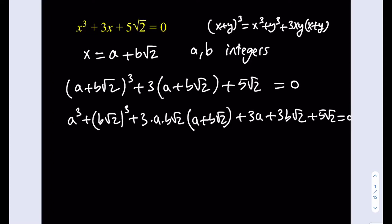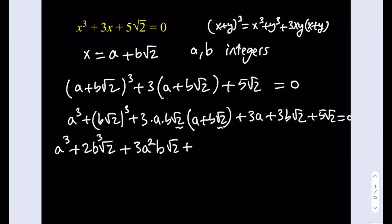Let's expand this more. This becomes a³. Now, how do you cube b√2? b³ is just b³, but (√2)³ = √2 · √2 · √2 = 2√2, so (b√2)³ = 2b³√2. Then distributing 3ab√2 over (a + b√2) gives 3a²b√2, plus a √2 · √2 term which gives 6ab², with no radical since √2 · √2 = 2. Then plus 3a + 3b√2 + 5√2, all equal to 0.